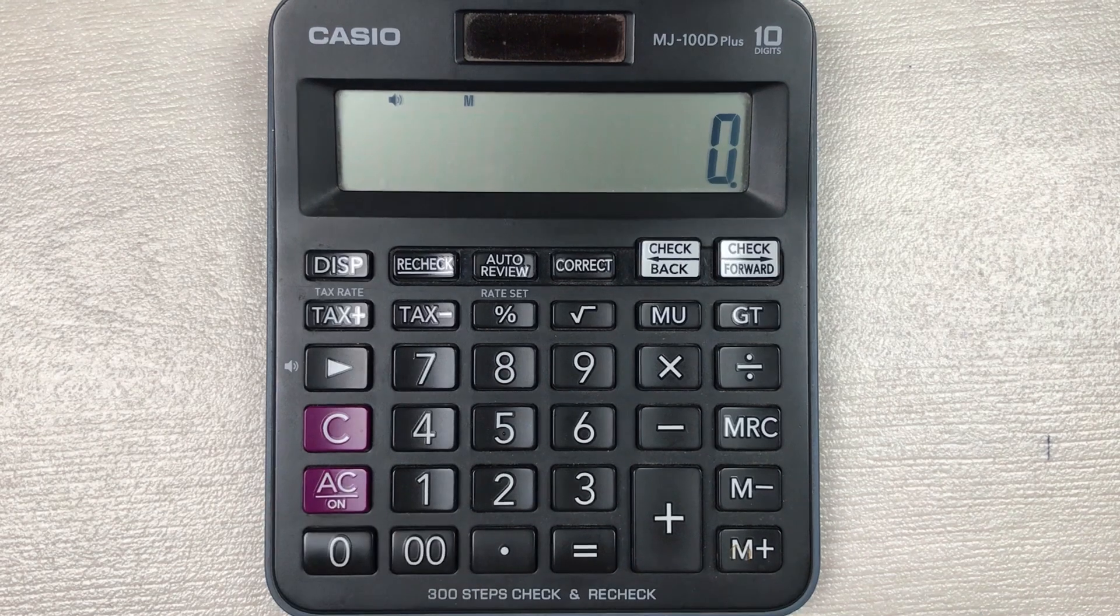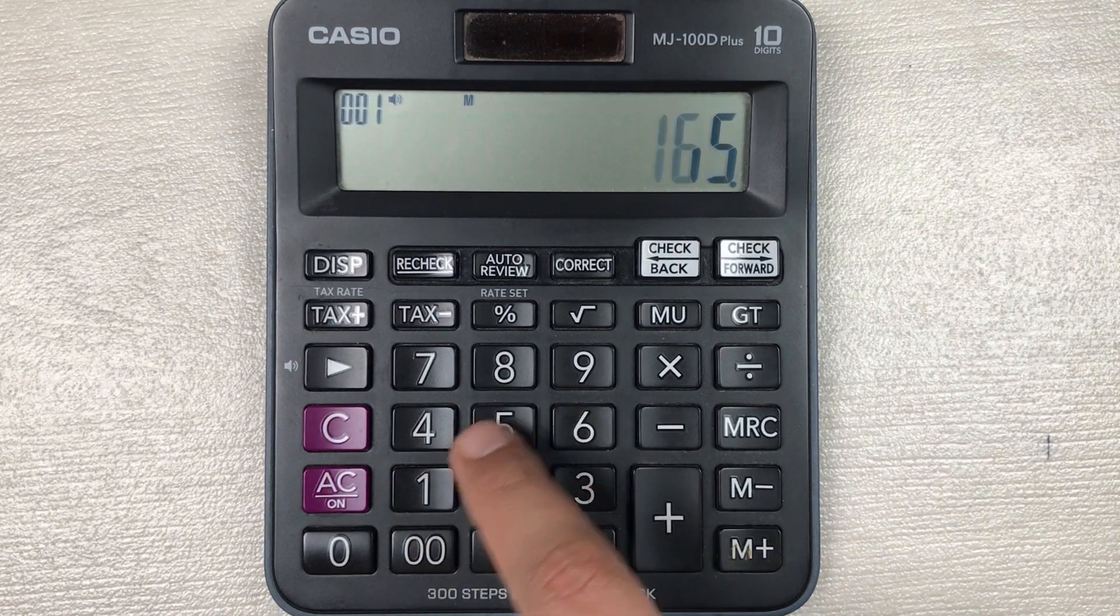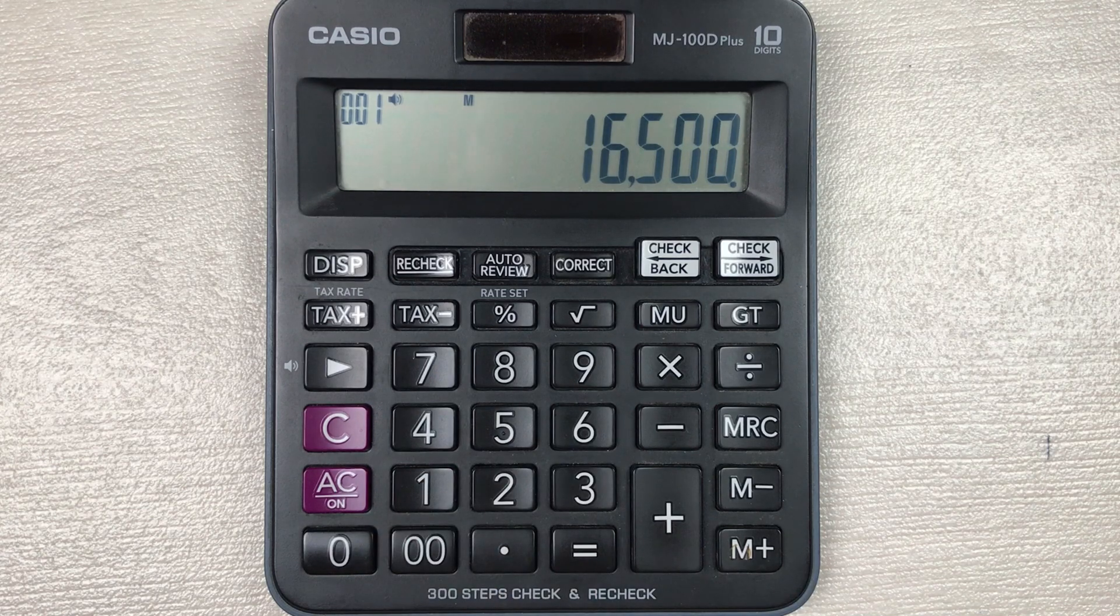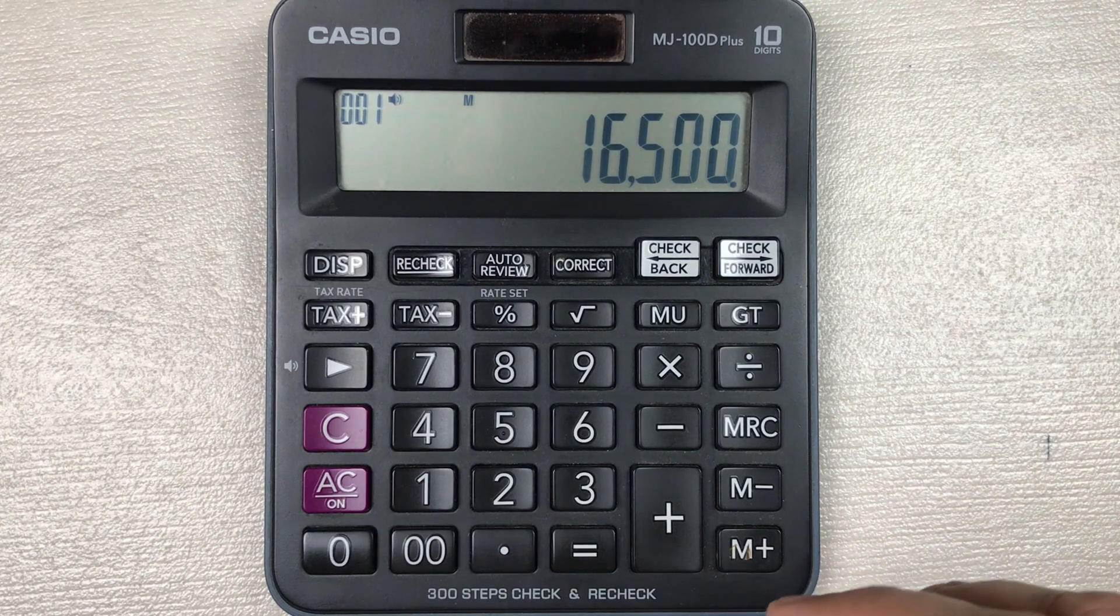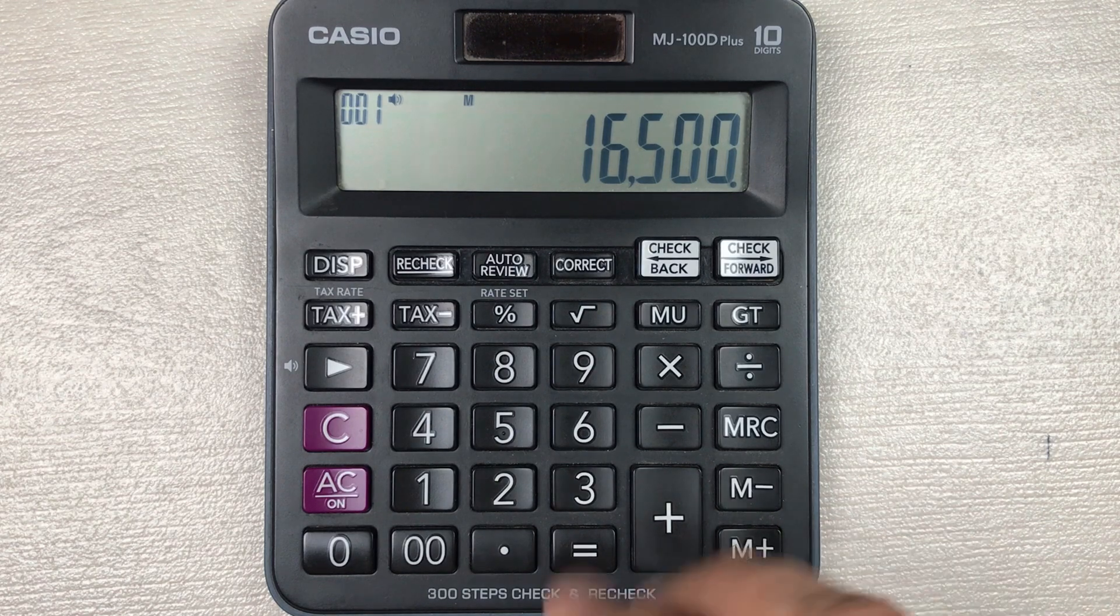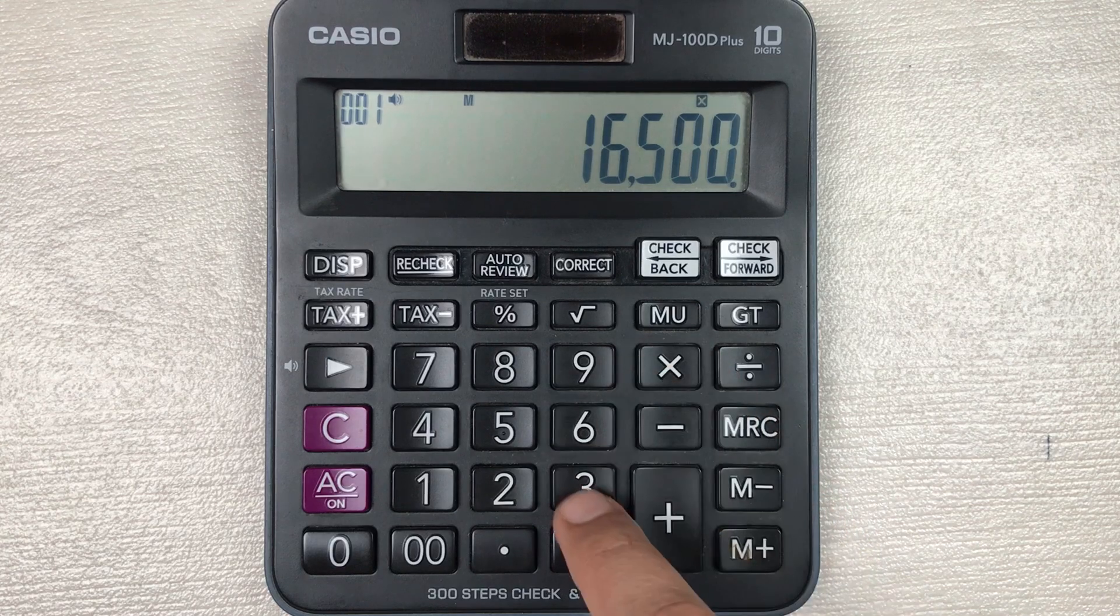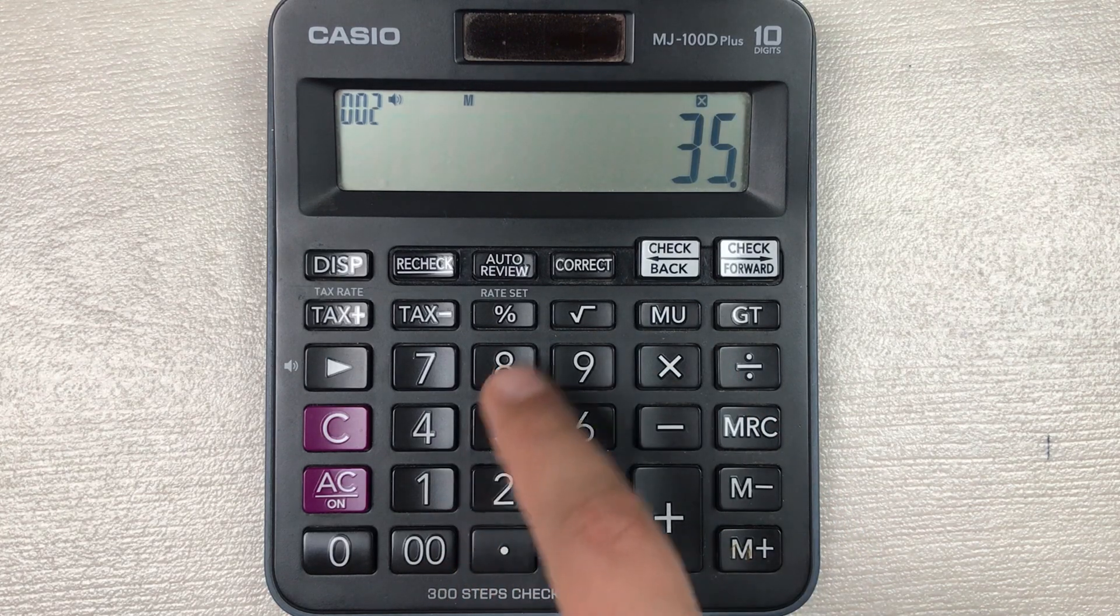Let's say the price of an item is 16500 and you want to know how much will be the final price after 35 percent off. So 16500 you type, then you multiply it with 35.